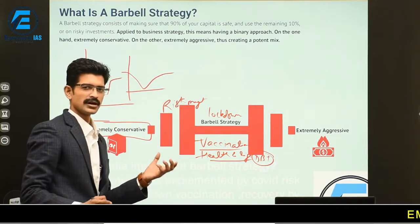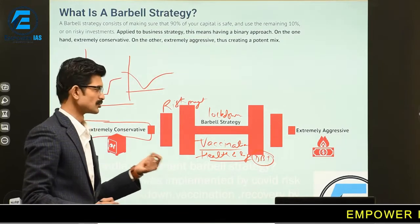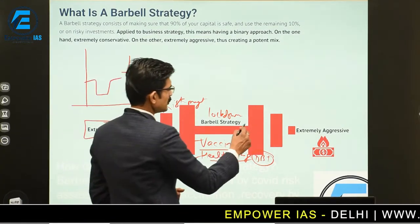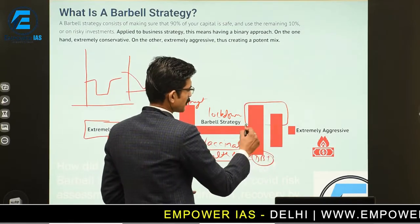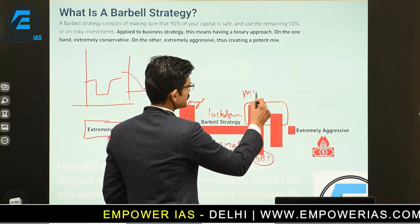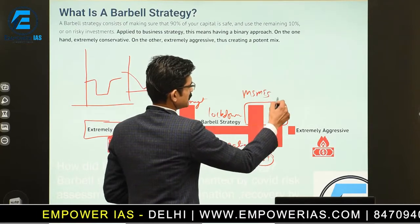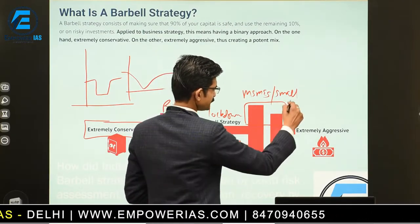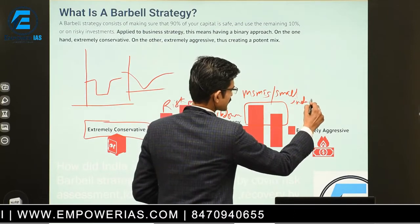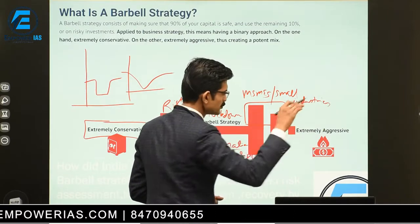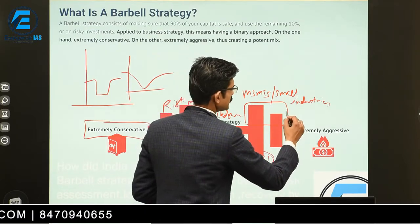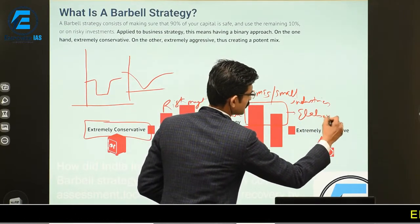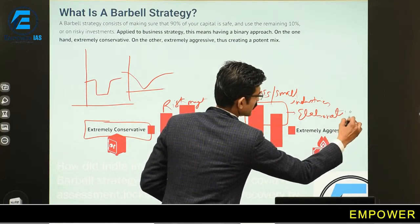People who were sitting at home and facing various challenges due to the lockdown received support. The government also tried to manage the problems of MSMEs and other industries — small industries — by reducing the burden and by elaborating or extending the deadline.